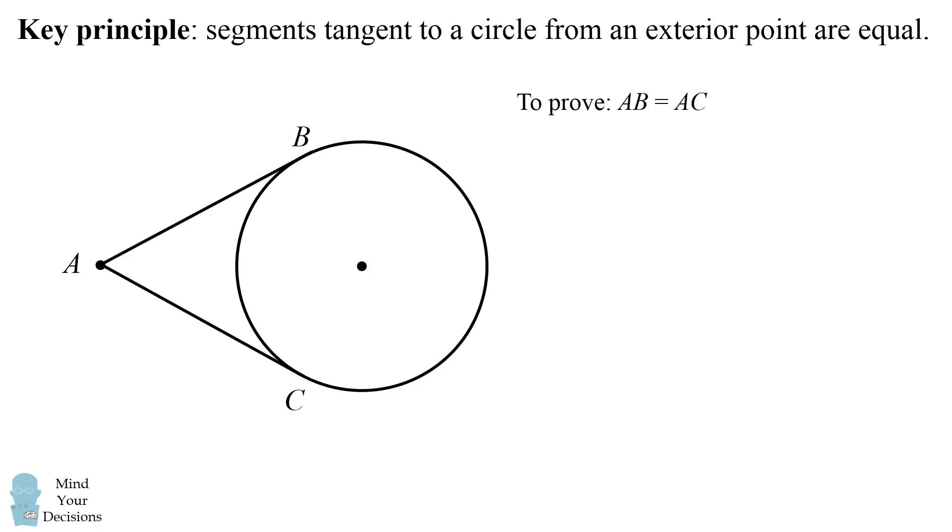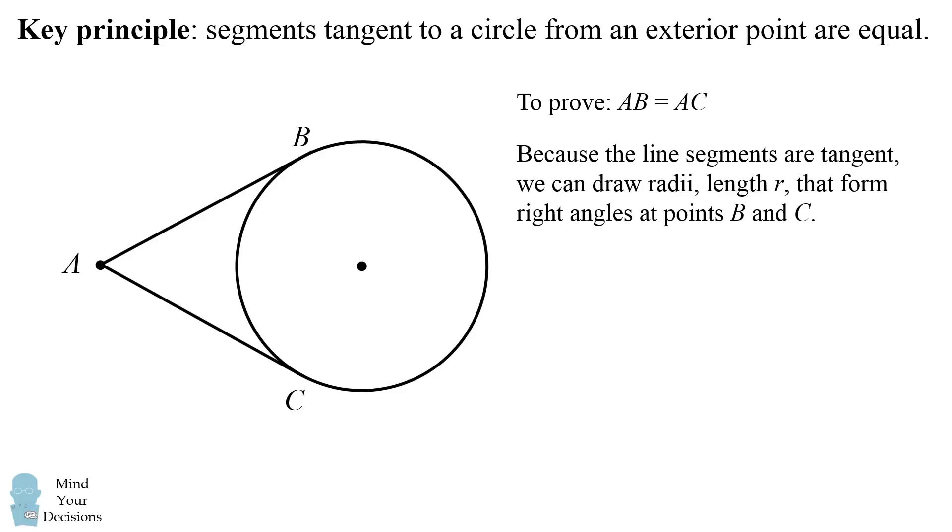How do we do that? Well, because the line segments are tangent to the circle, we can draw radii, each with the length of the radius of the circle R that form right angles at points B and C. So here's a right angle at point B, and we can do the same thing to point C. And each of these segments have length R because they are radii of the same circle.